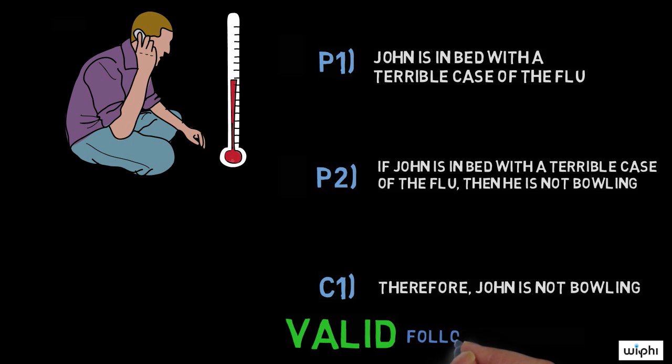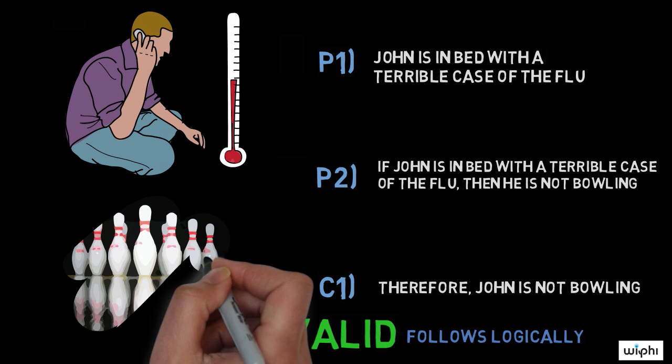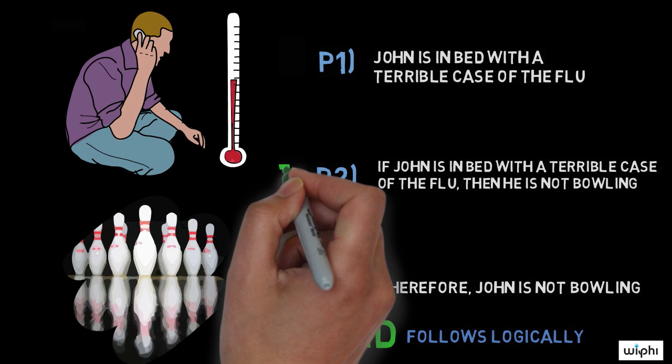This argument is valid. Its conclusion follows logically from its premises. So, if John's boss were to see him bowling, what could she conclude?